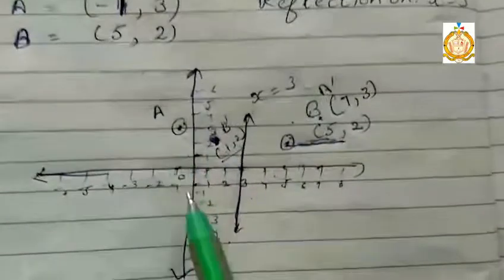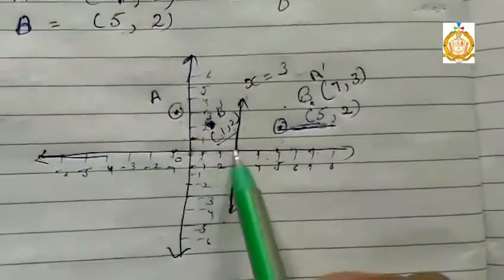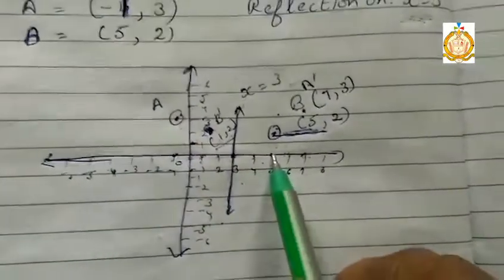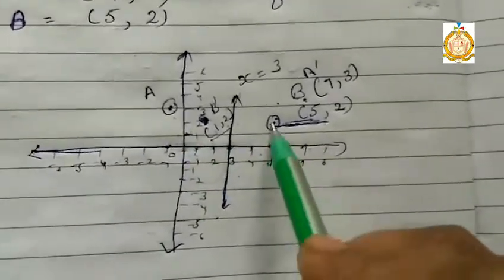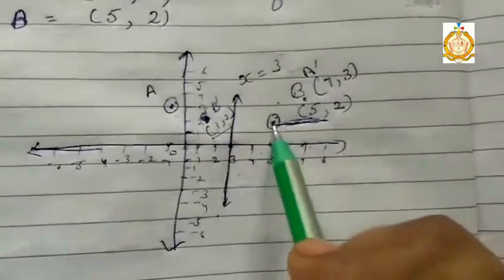On the same side, point B is given (5, 2). Now see, 5, where is 5? There is 5, and y is given 2, this is 2. This is my point (5, 2).